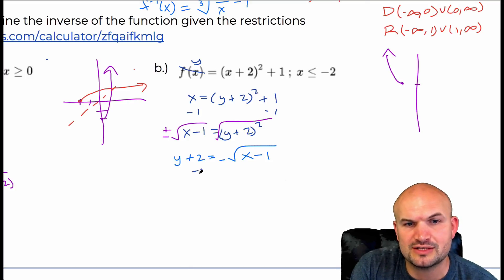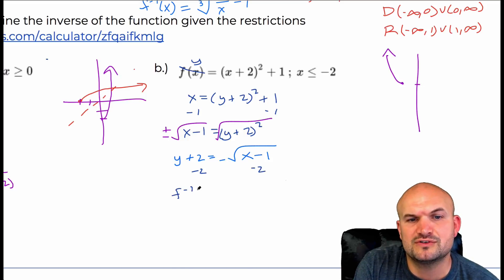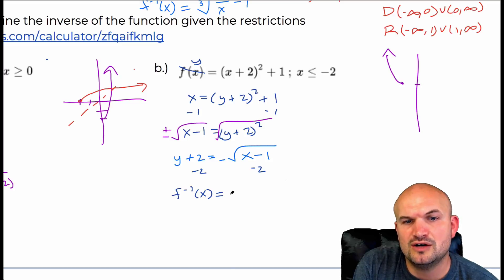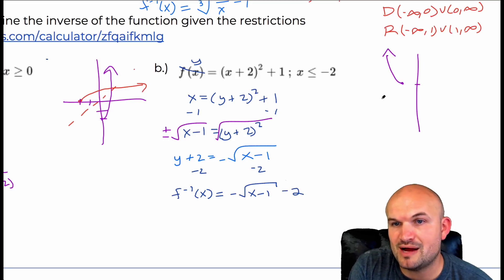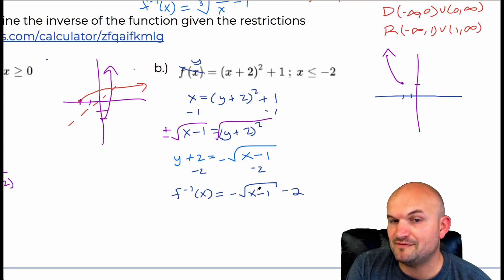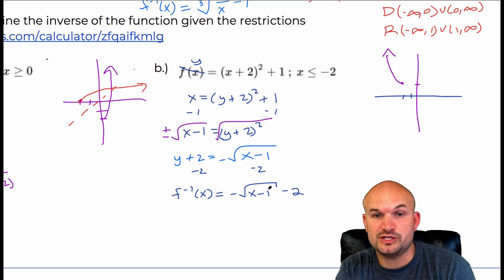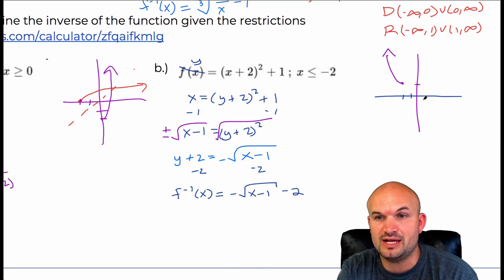We subtract 2 on both sides and get the final inverse function: f inverse of x equals negative square root of x minus 1, minus 2. This is a radical function that has been reflected about the x-axis, shifted one unit to the right and down 2.